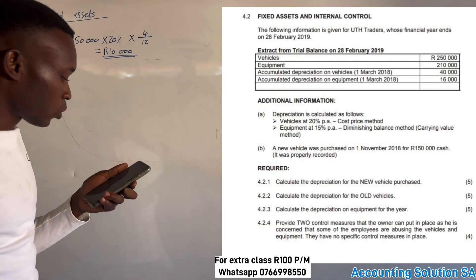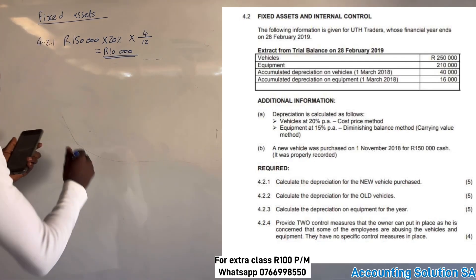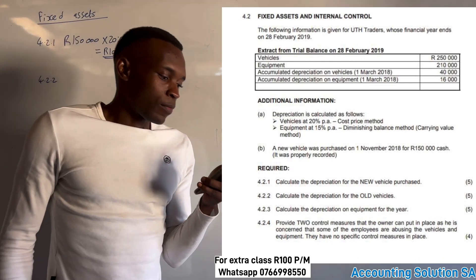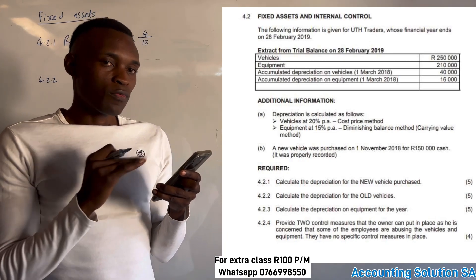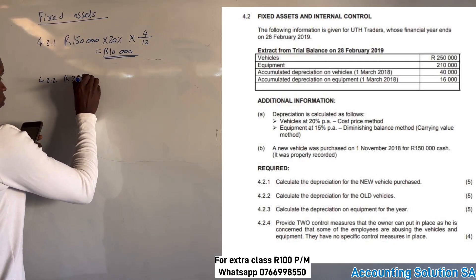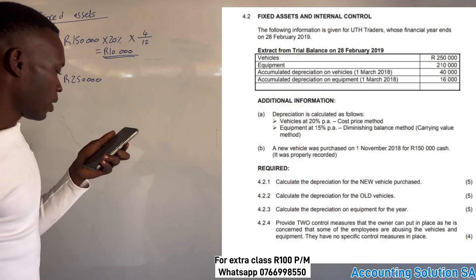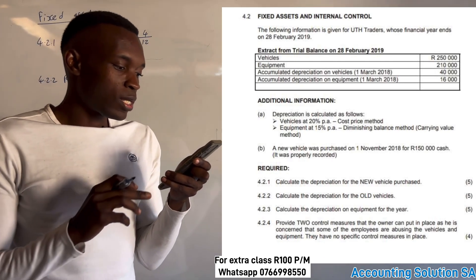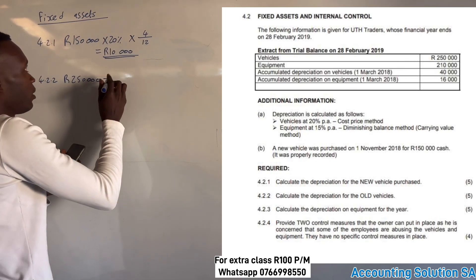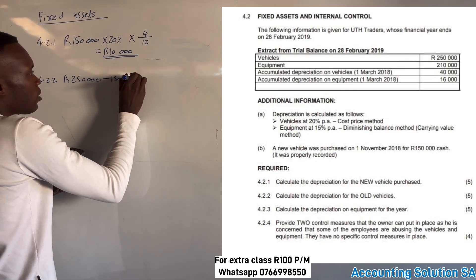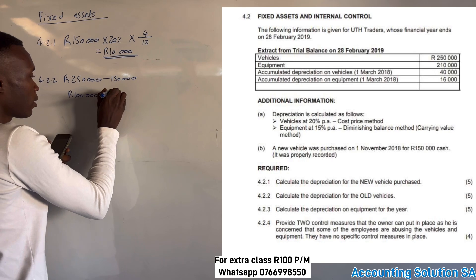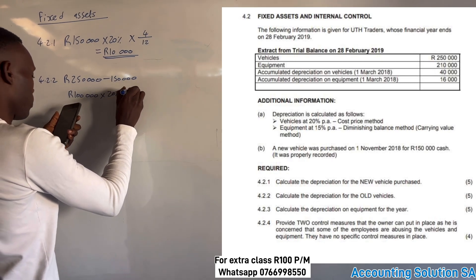Question 4.2.2: Calculate depreciation for the old vehicle. The vehicle cost price recorded in the trial balance is R250,000, but this R250,000 includes the new vehicle. Since the new vehicle was properly recorded, we must subtract R150,000 first, leaving us with R100,000 for the old vehicle. We then multiply R100,000 by 20%, which gives us R20,000.